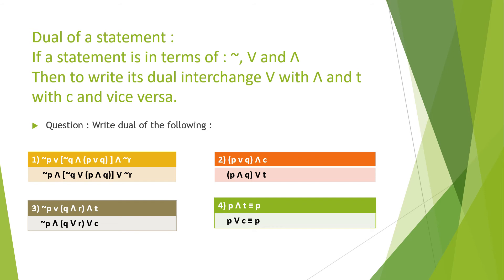If the statement contains a tautology or contradiction, we also interchange tautology and contradiction. Let's consider this example: write the dual of the following statement. The first statement pattern given is: negation P ∨ negation Q ∧ (P ∨ Q) ∧ negation R. Remember, we interchange OR and AND, and tautology and contradiction.